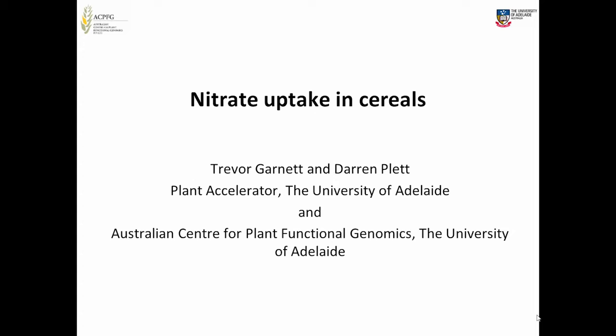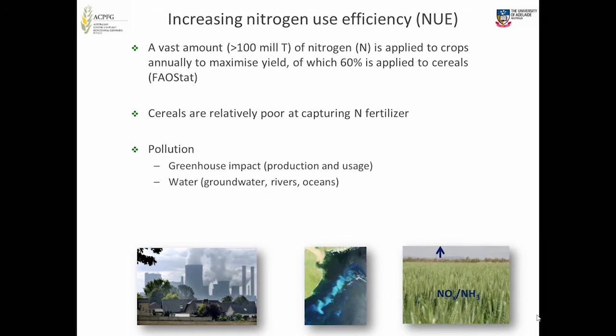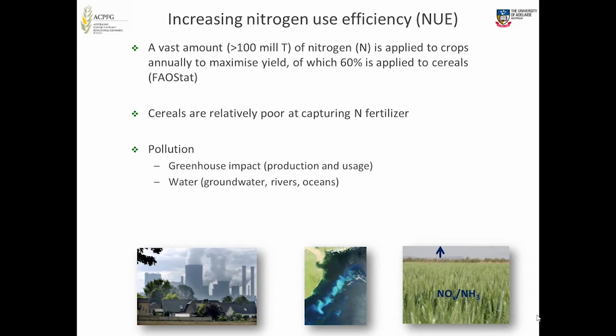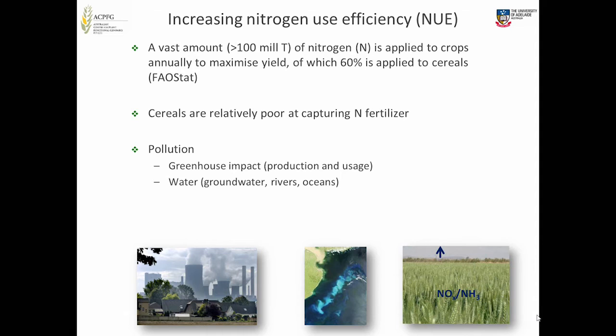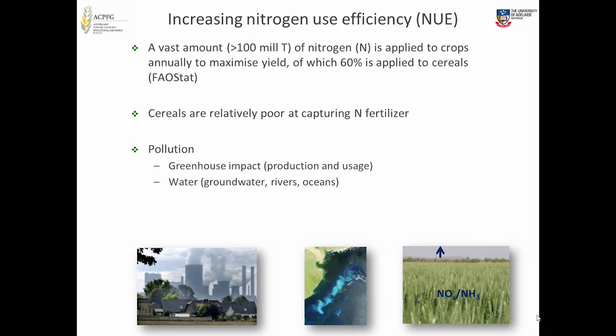Hopefully all of you understand about why we want to increase nitrogen use efficiency. There's a vast amount of nitrogen applied to crops annually — over 100 million tonnes, and 60% of that is applied to cereals. Cereals are relatively poor at capturing that nitrate fertiliser, and that has a huge environmental impact.